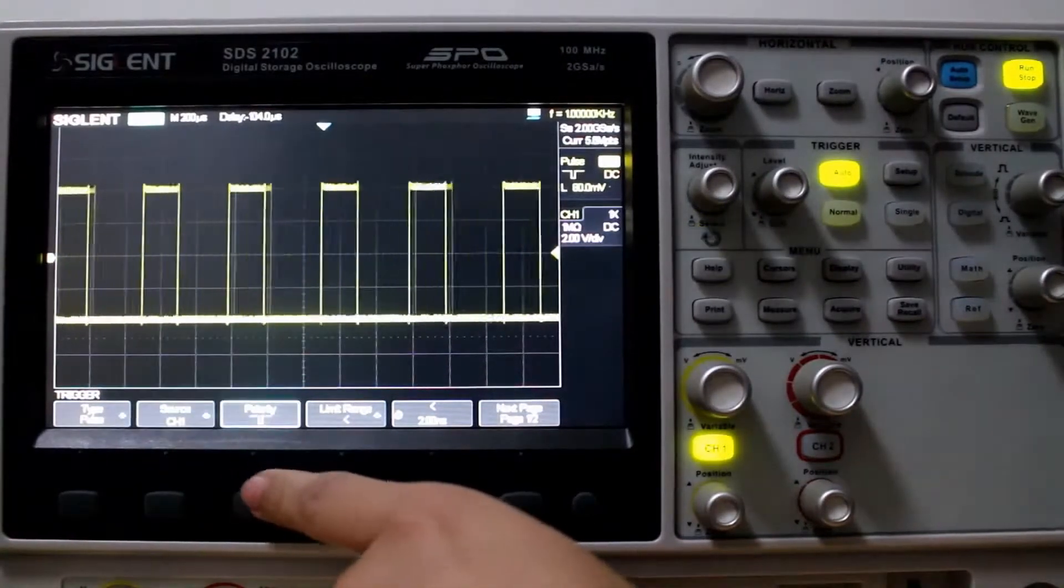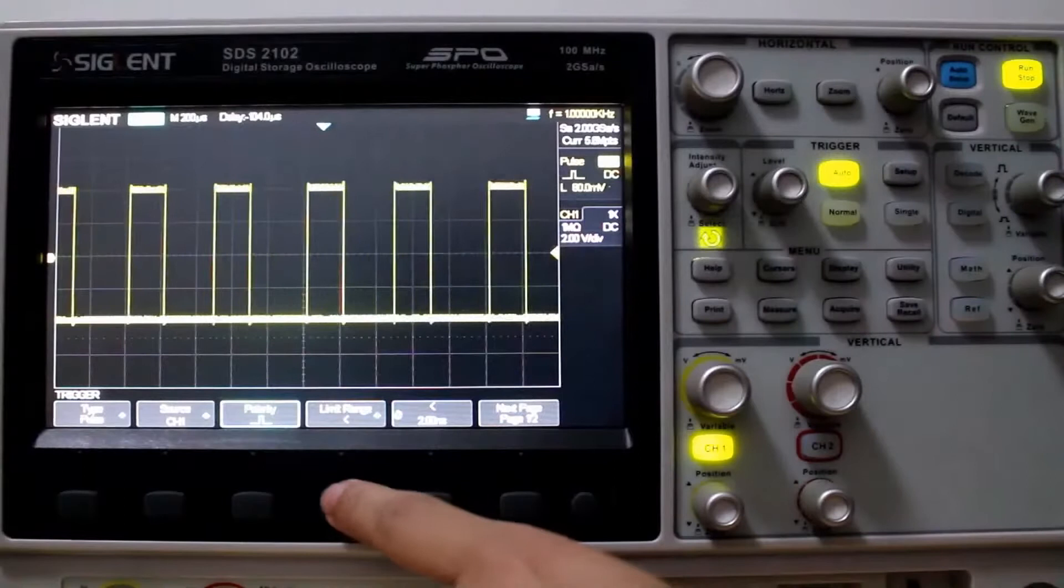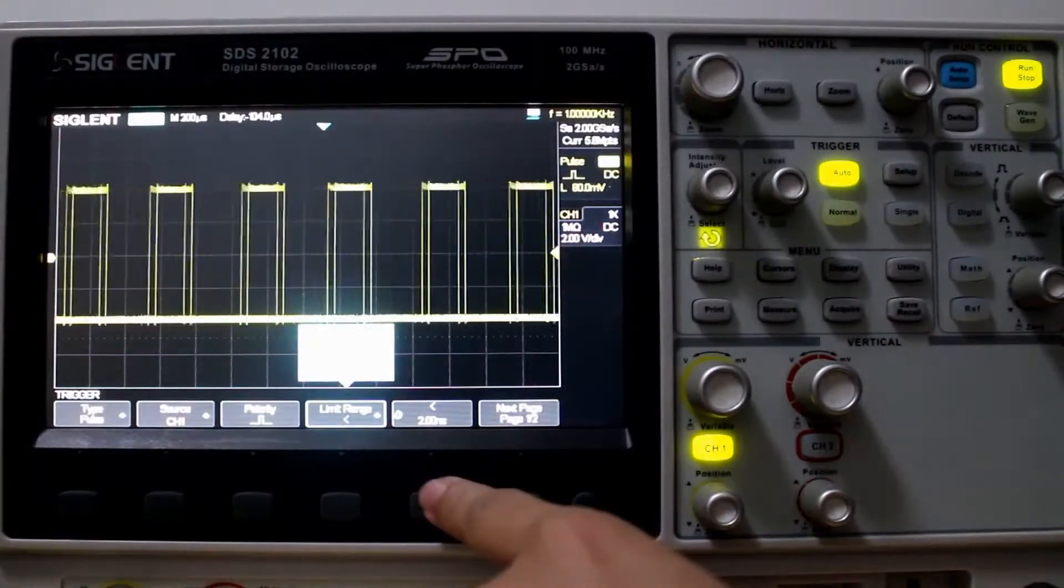Channel one, good. Polarity, positive and negative. Let's set it to positive. Limit range, we can go less than, good.